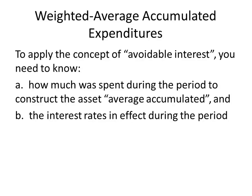So what you have to do is figure out, what's the average that I spent over the year? What's the average debt that I incurred during the year? That's called your weighted average accumulated expenditures. So you figure out how much was spent during the period to construct the asset. That was the average that you accumulated, and then you figure out the interest rate that was in effect during that same time period.